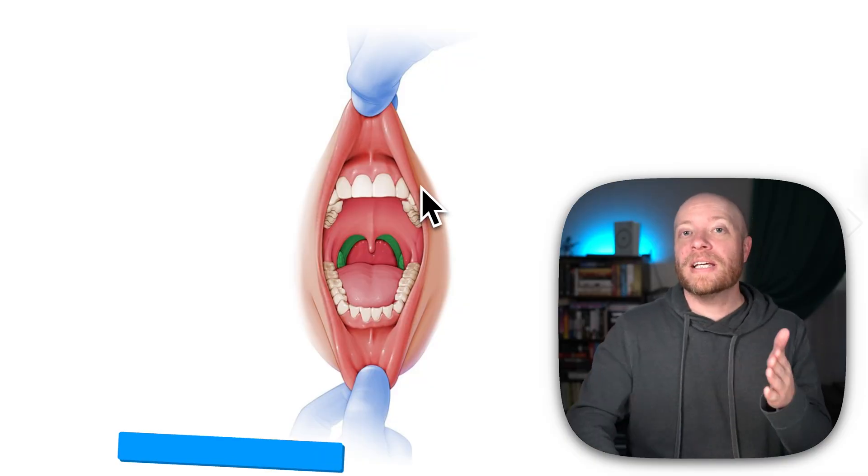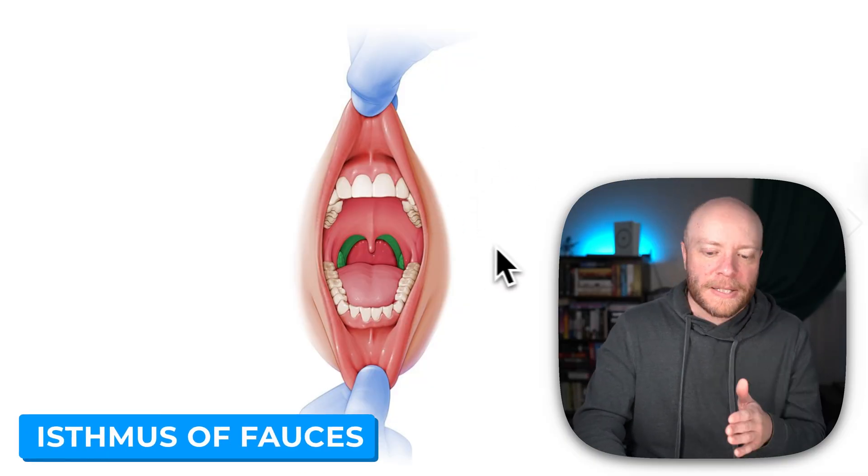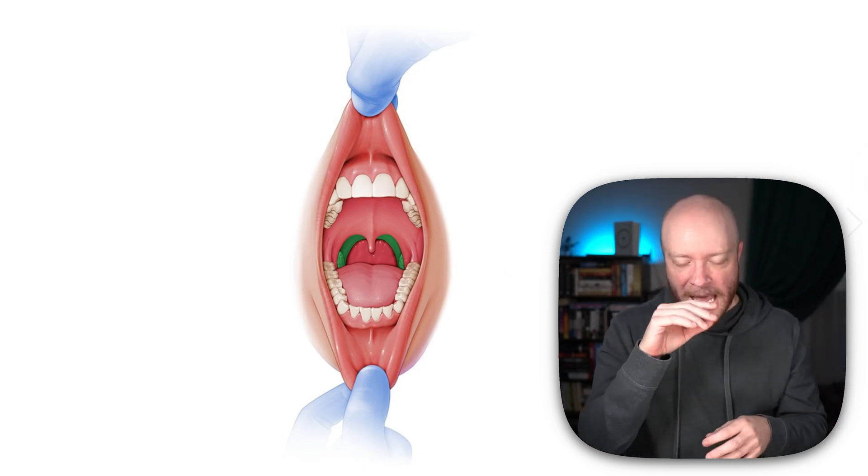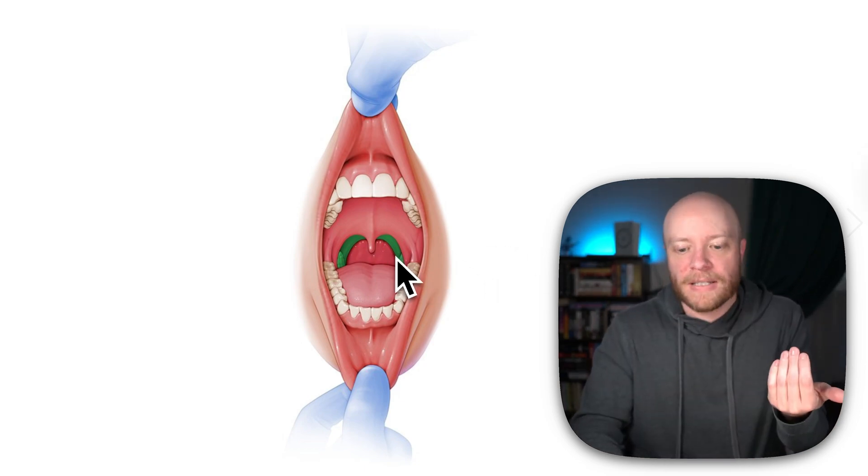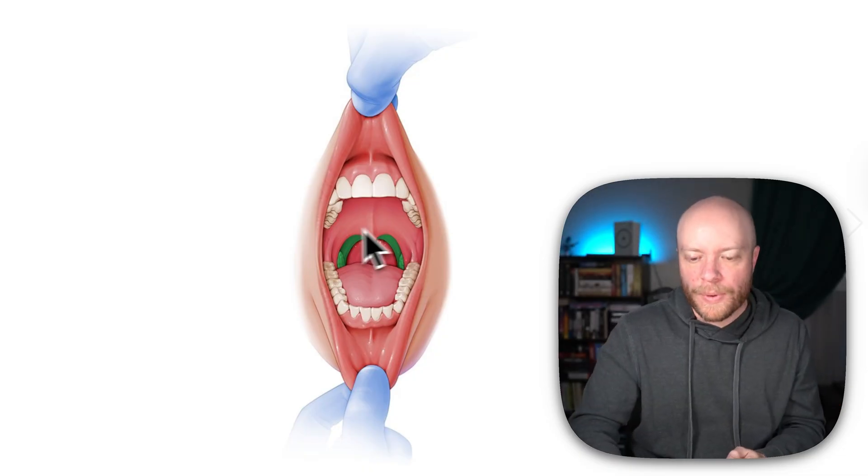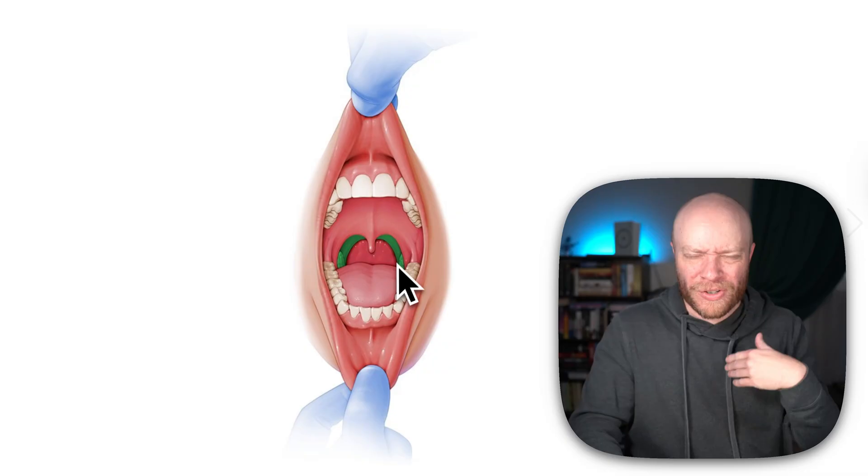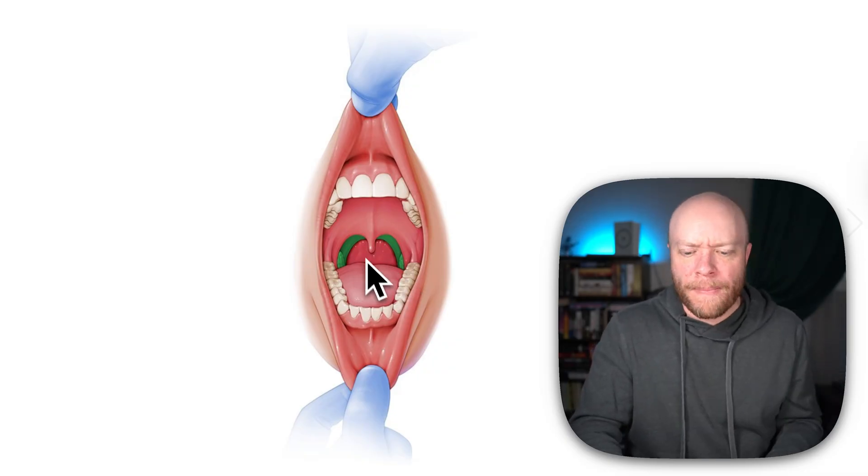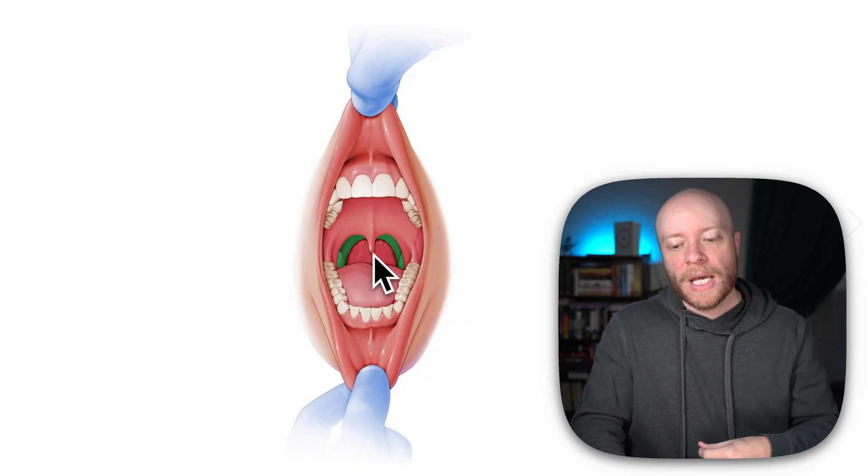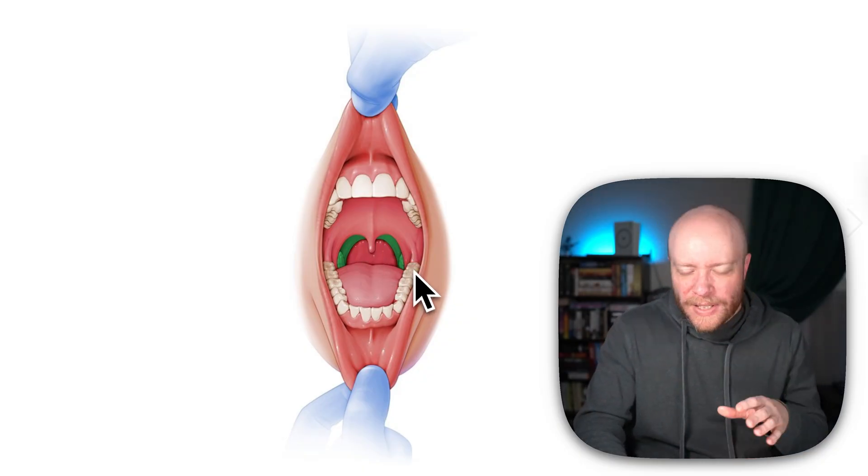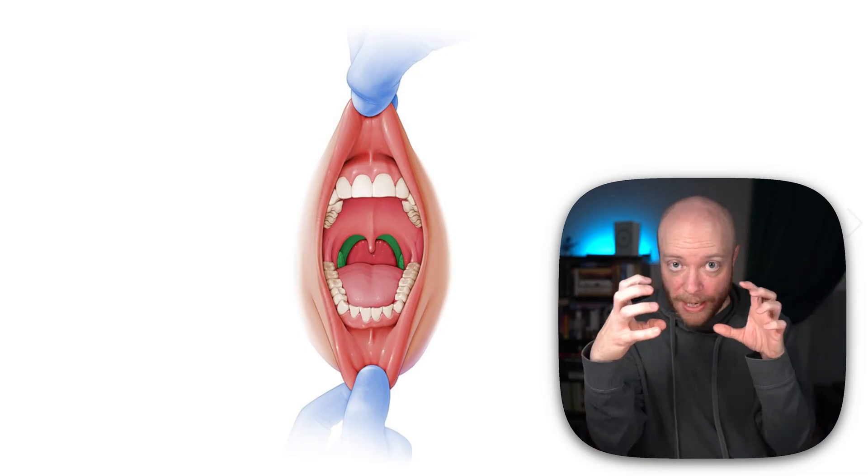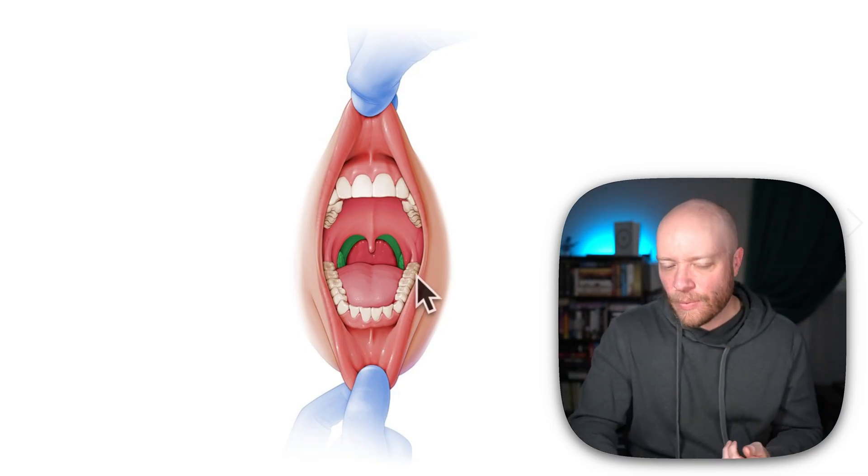We then meet what's called the isthmus of fauces. An isthmus is kind of like a strip of land between two bodies of water. What the isthmus of fauces is going to be is basically the transition from what we'd call your oral cavity or mouth even, towards what's known as the pharynx or your throat. This is like a strip of land just between two separate areas, and that's exactly what this is.